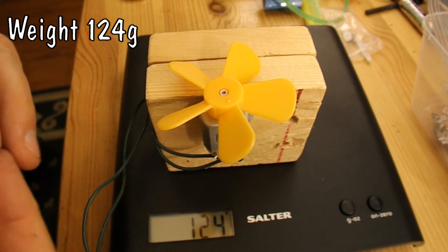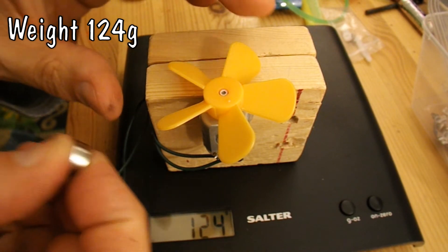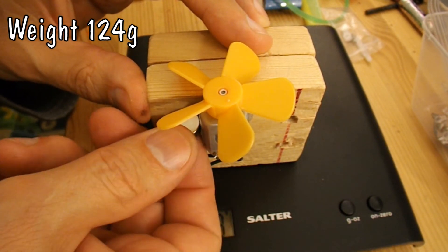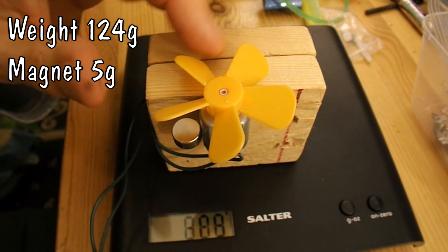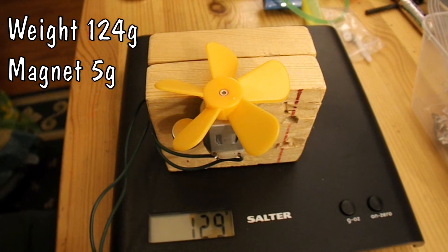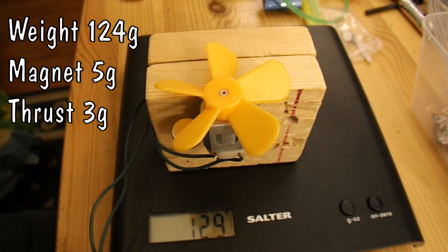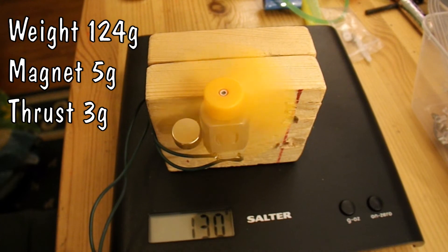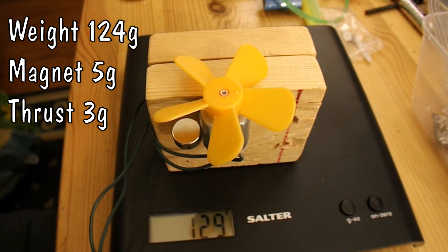If we try one of the neodymium magnets, we've increased the weight to 129 and we go up to 132. So again that's about three grams of thrust.